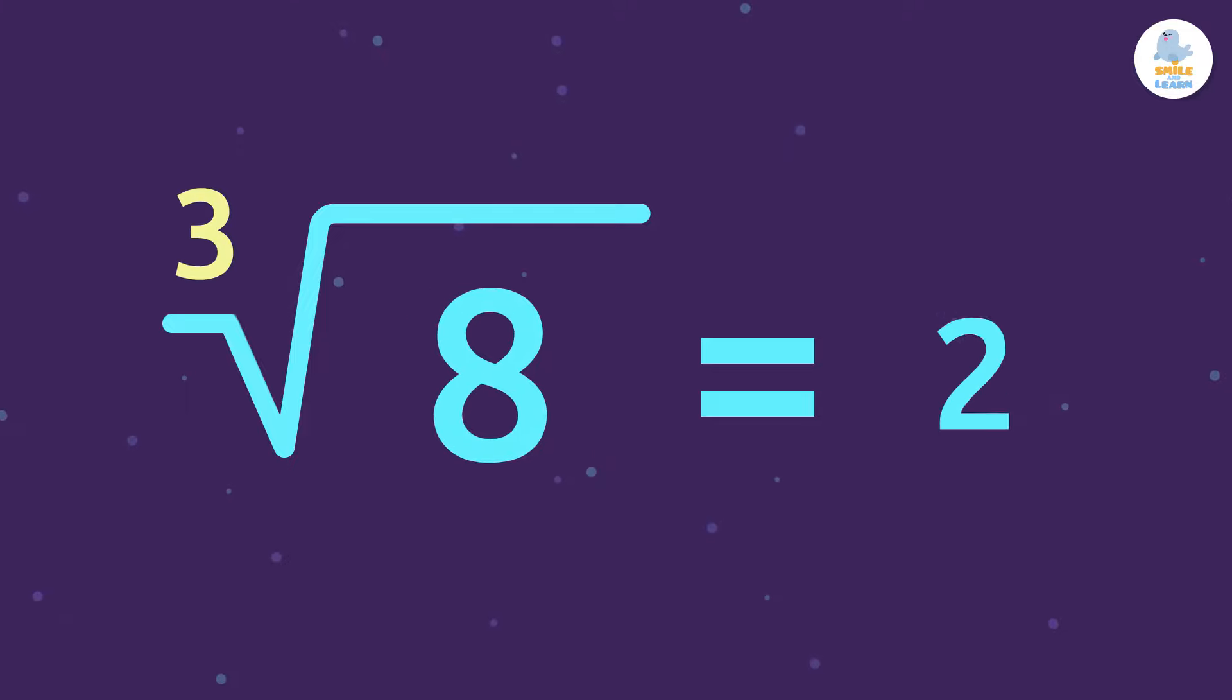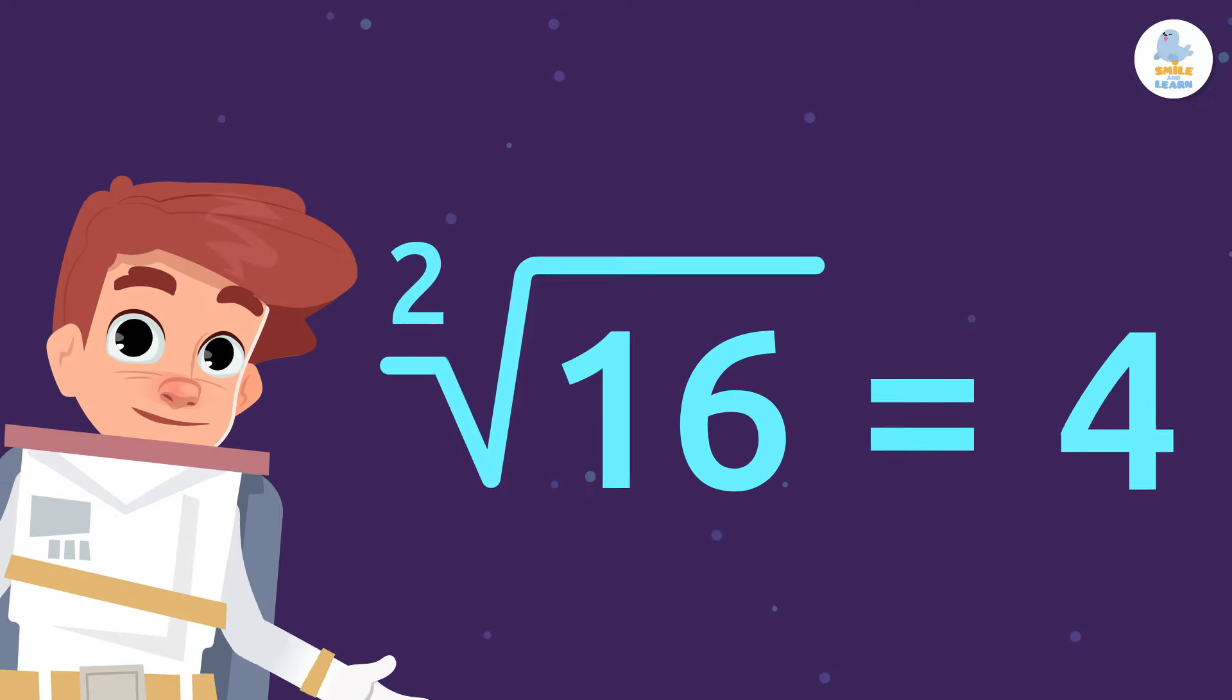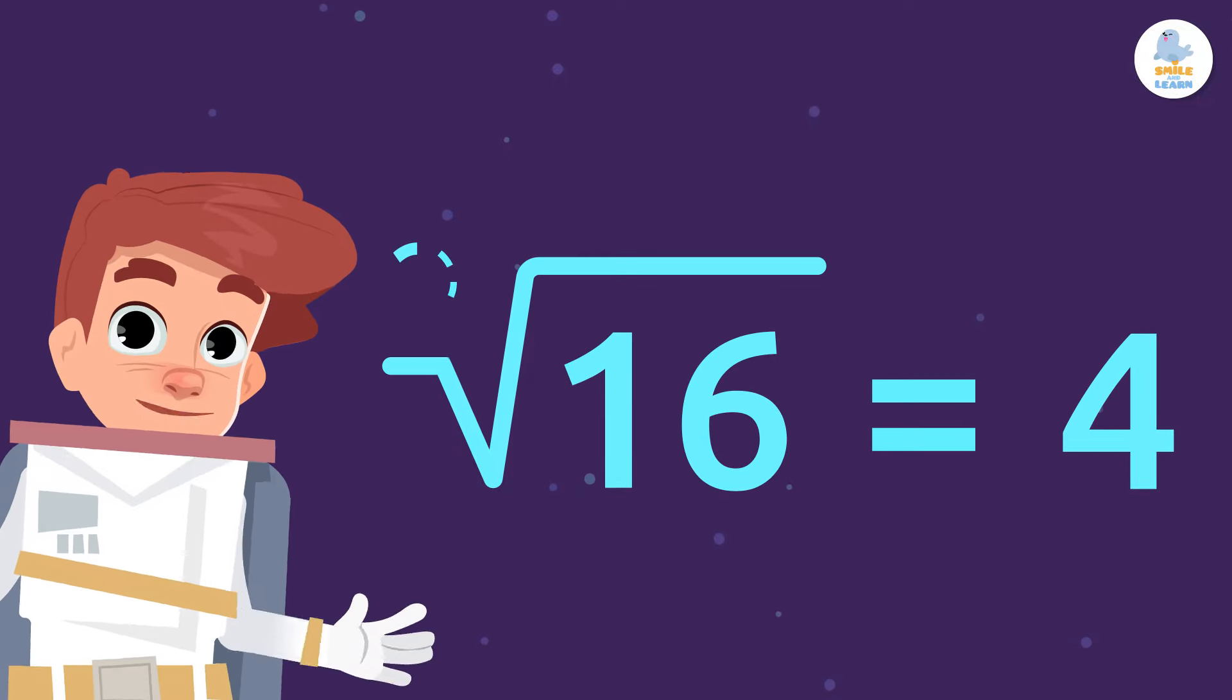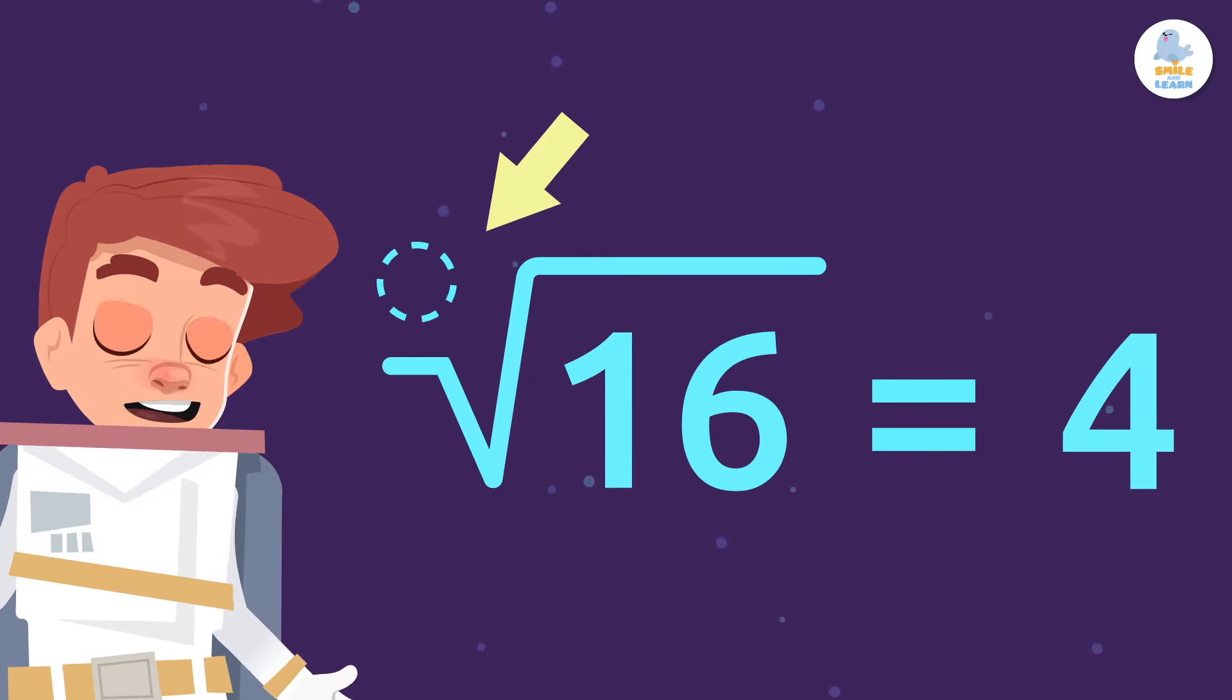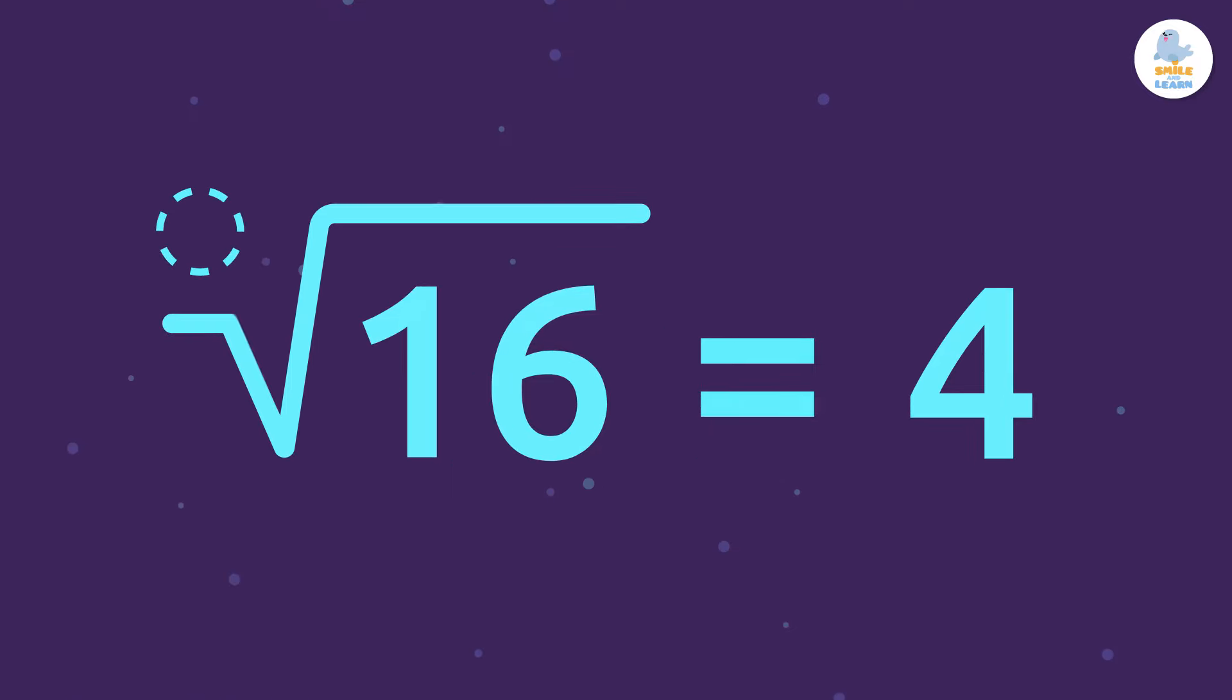For example, if we see a 3, it would be a cube root. Just so you know, sometimes there is no number where the index goes. If we don't see an index, that always means that it is a square root, so we can just imagine that it has a 2 as the index.